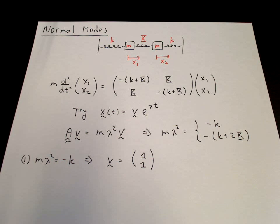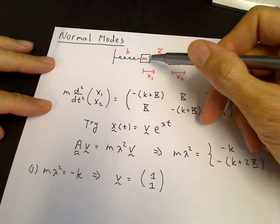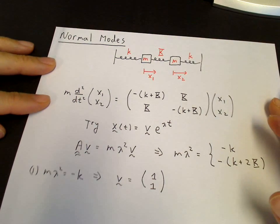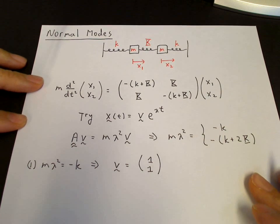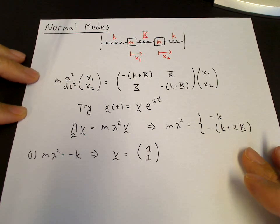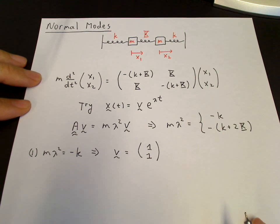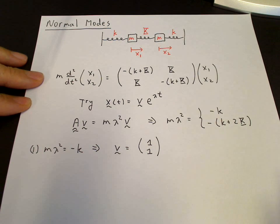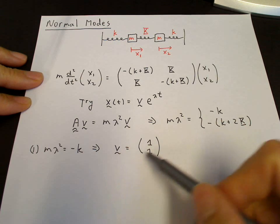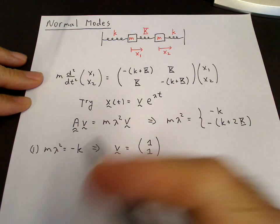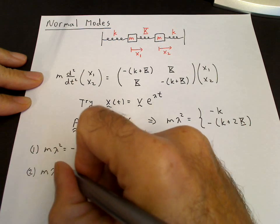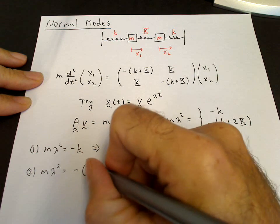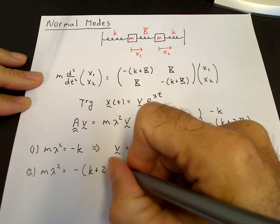This is part two of the normal mode video. We are considering two masses coupled by three springs. We found the eigenvalues — m lambda squared — and now we're looking for the eigenvectors. With the first eigenvalue, m lambda squared equals minus k, we have the eigenvector [1, 1]. For the second eigenvalue, m lambda squared equals minus k plus 2 capital K.